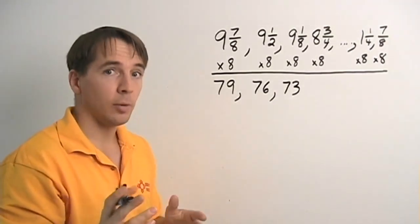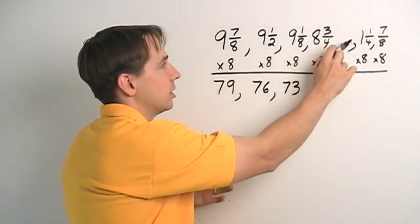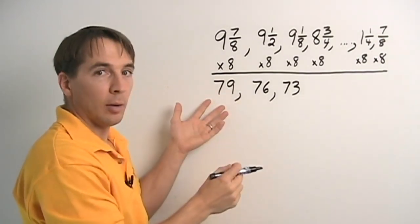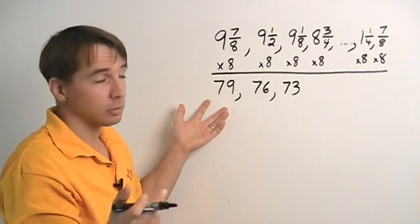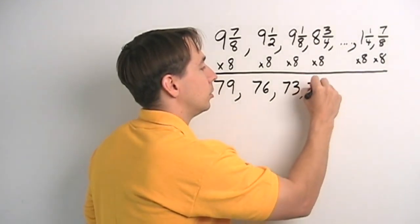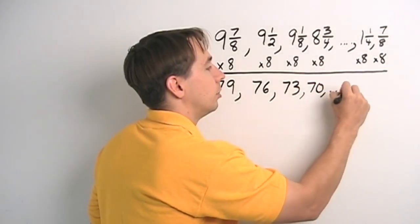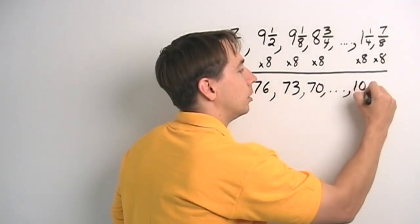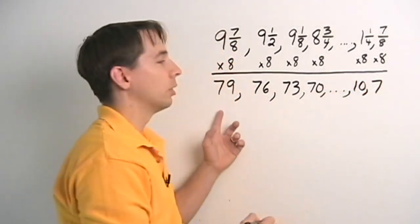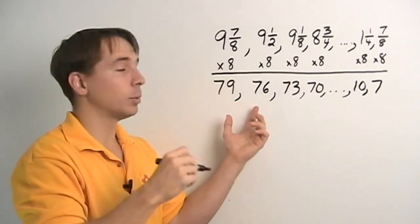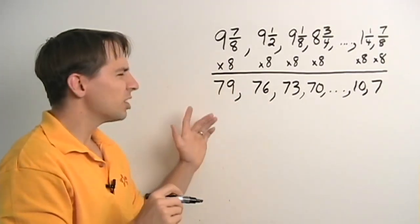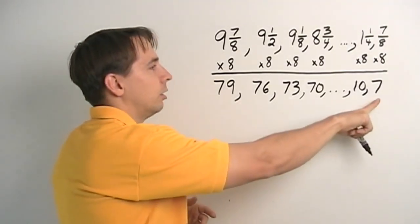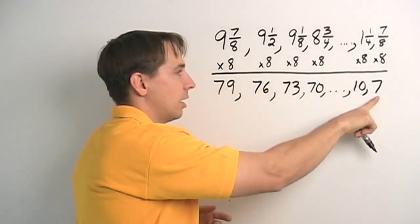And we notice our list is going down by 3 each time. And that makes sense, right? We were going down by 3/8 each time in this list. So when we multiply everything by 8, now our new list will go down by 3/8 times 8, which is just 3. And if we keep going, we have this list. And this list looks a lot like lists we know how to deal with. All right? Each step is, in this case, it's negative 3, we're going down 3.